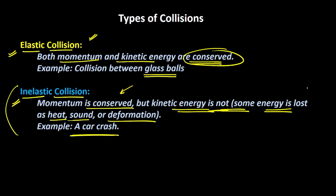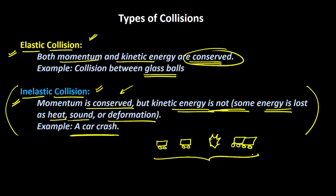There is a sub-case called perfectly inelastic collision. For example, a car colliding with another car where after the collision both cars move together — this is an example of a perfectly inelastic collision where both objects glue together and start moving with the same velocity.